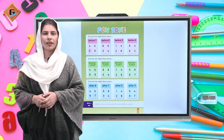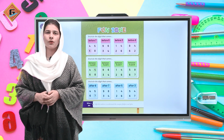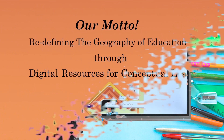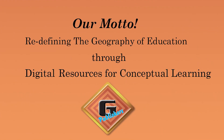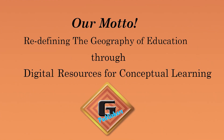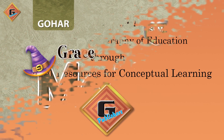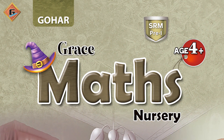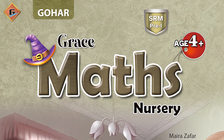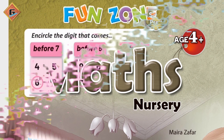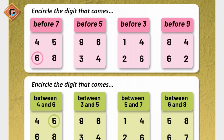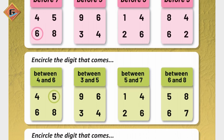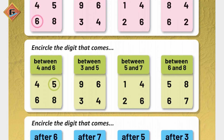Assalamu alaikum, my name is Fiza Abdul Manaan, hope you all are good. Welcome to Goha Publisher. Our motto is redefining the geography of education through digital resources for conceptual learning. Our book name is Goha Grace Mass Nursery, age 4 plus. We are going to start our page number 25.